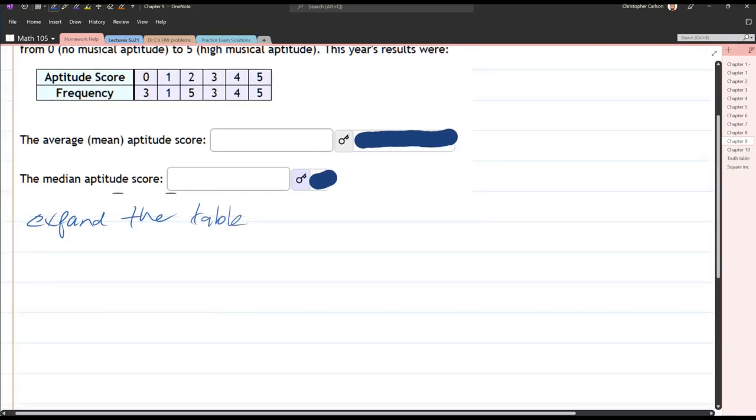Alright, so 3 people had a 0, so we have 3 zeros. Next up, 1 person had a 1, so there was 1 one. Next up, there's 5 twos. 5 twos, 3 threes.